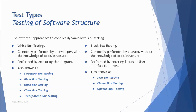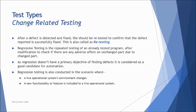There are no other colors in testing beyond white and black. Now, the last topic of this session is change-related testing. When a defect is reported and the development team fixes it, you rerun the same test case that revealed the defect to confirm it has been resolved. This is called confirmation testing, which is also known as retesting. ISTQB prefers the term confirmation testing, so please remember that name.